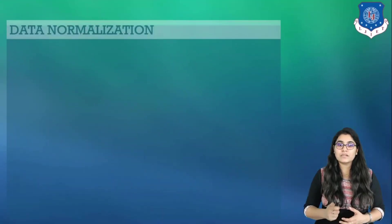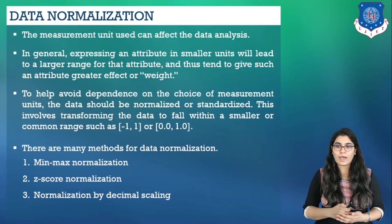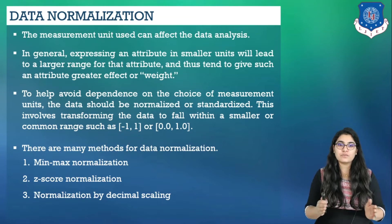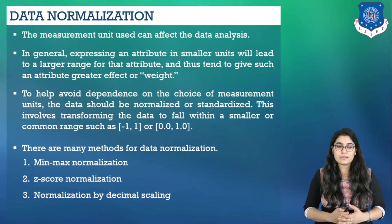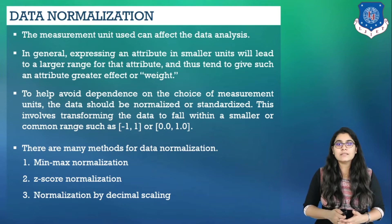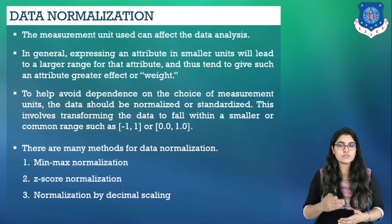The measurement unit used can affect data analysis. For example, changing the measurement unit from meters to inches for height, or from kilograms to pounds for weight, may lead to very different results. In general, expressing an attribute in smaller units will lead to a larger range for that attribute and thus give it greater effect or weight. It is also possible that different databases use different height or weight measurements. To avoid dependence on the choice of measurement units, the data should be normalized or standardized — transforming the data to fall within a smaller or common range such as -1 to 1 or 0 to 1. Normalizing the data attempts to give all attributes an equal weight.